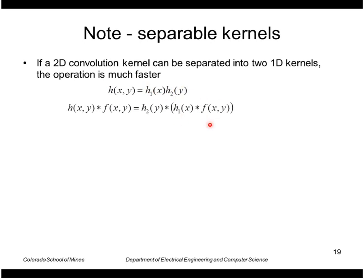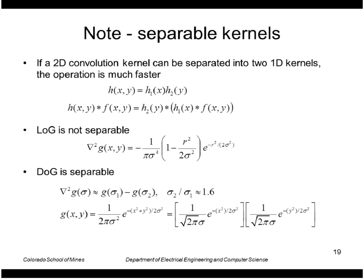A one-dimensional filter in x followed by a one-dimensional filter in y, which is faster. So even though Laplacian of Gaussian is not separable, the difference of Gaussian is because it just uses Gaussians. So each Gaussian here can be represented as a product of two Gaussians, one in x and one in y.